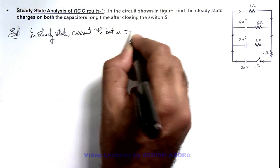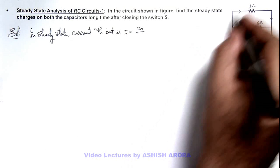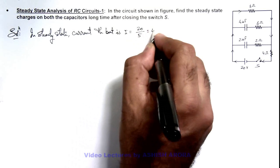The value of current we can calculate as 20 divided by the total resistance of this loop is 5 ohm, so this is 4 ampere.